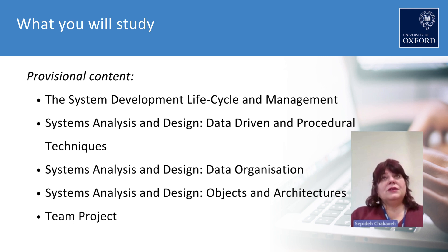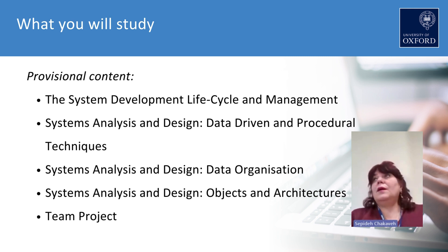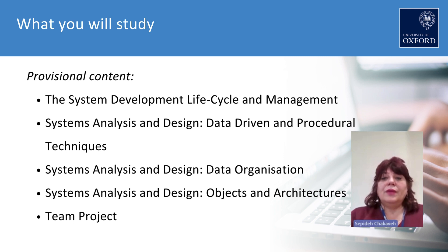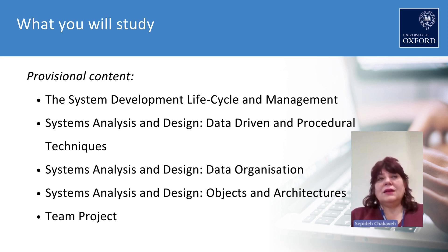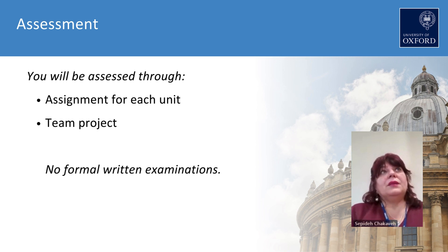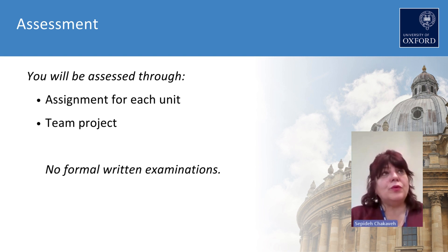There are five units within ADITSAT. Unit one covers system development and lifecycle management. Unit two is about analysis of system design and the data-driven and procedural techniques required to create a system. Unit three covers data organization, and unit four covers objects and architectures. Unit five is a team project. There are six summative assessments and you must pass all of them. There are no formal written examinations.